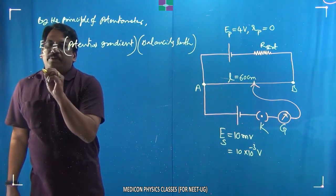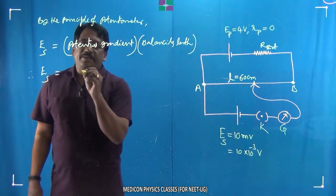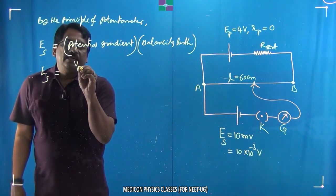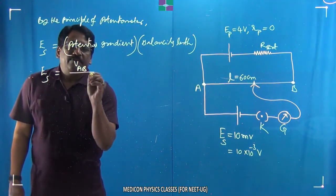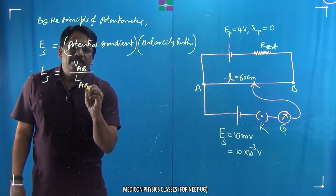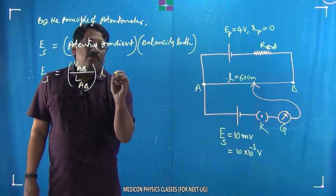Therefore, EMF in the secondary circuit equals the potential gradient, which is V across AB—the potential difference along the wire AB—divided by the total length of wire AB, multiplied by the balancing length L.